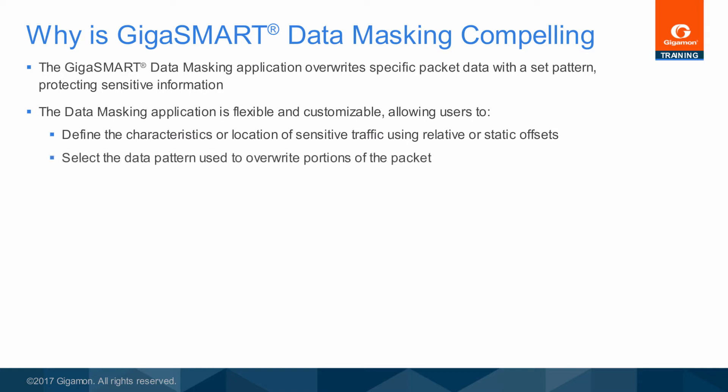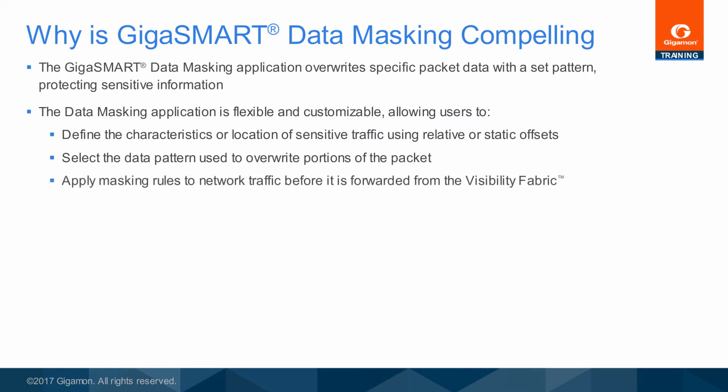Users are also able to automatically compensate for variable length headers, allowing them to specify a mask target in terms of a particular packet header and to compensate for the variable length headers associated with different protocols. The data pattern used to overwrite sensitive data is configurable as well. Data masking is applied to network traffic before it is forwarded to any tool port via GigaSmart masking rules.